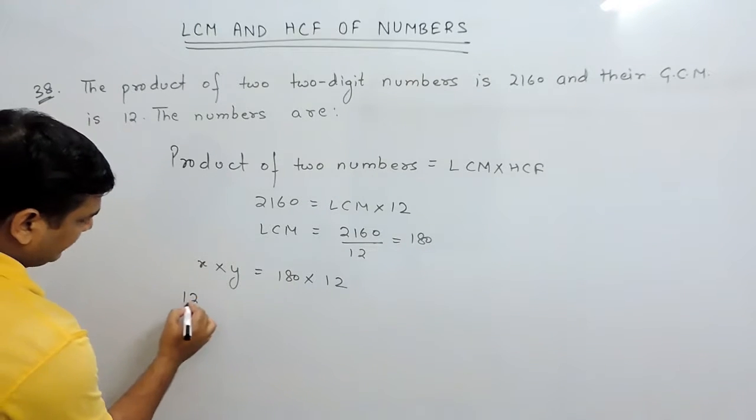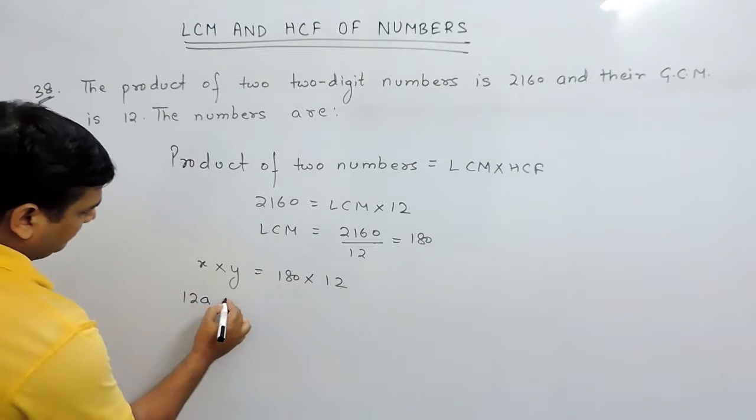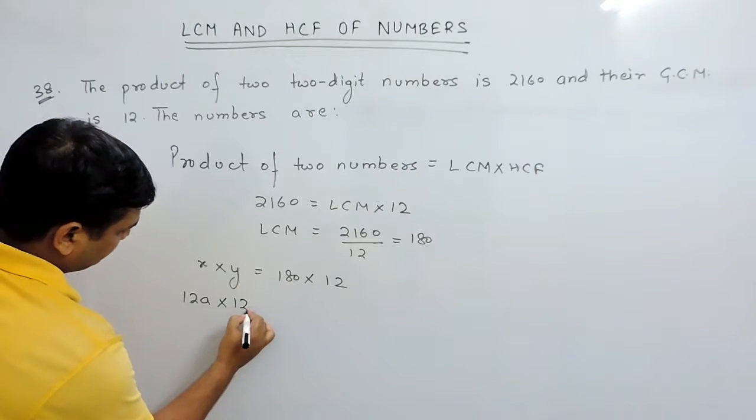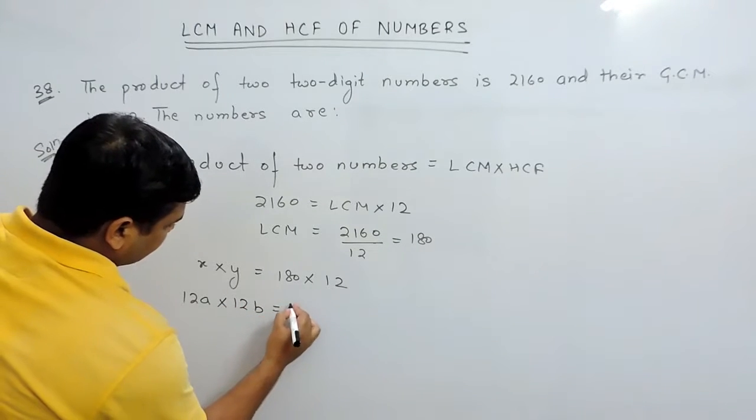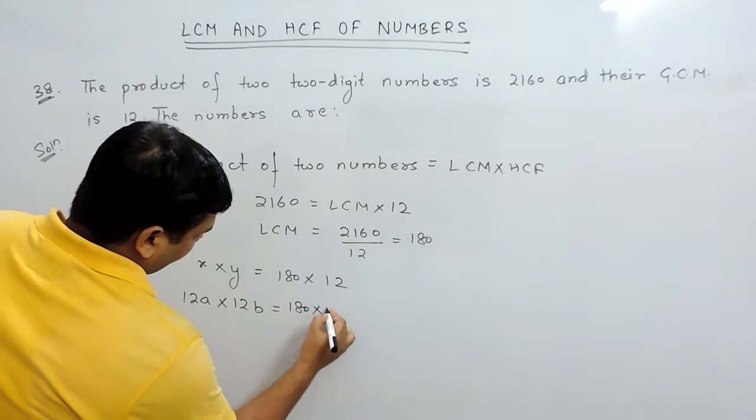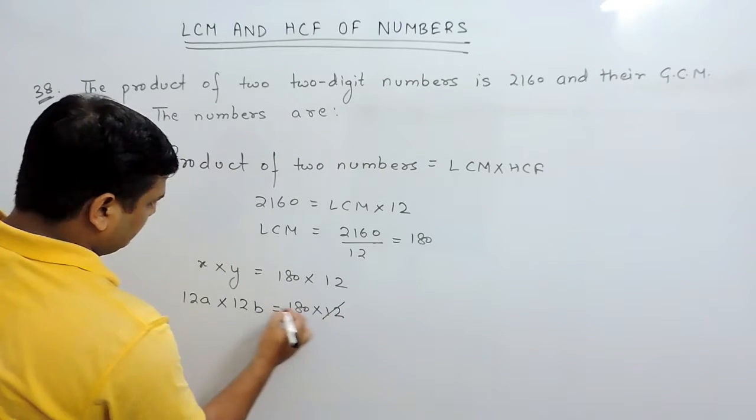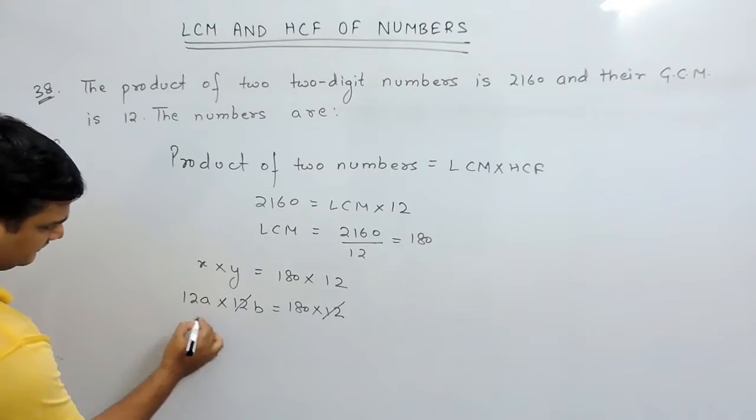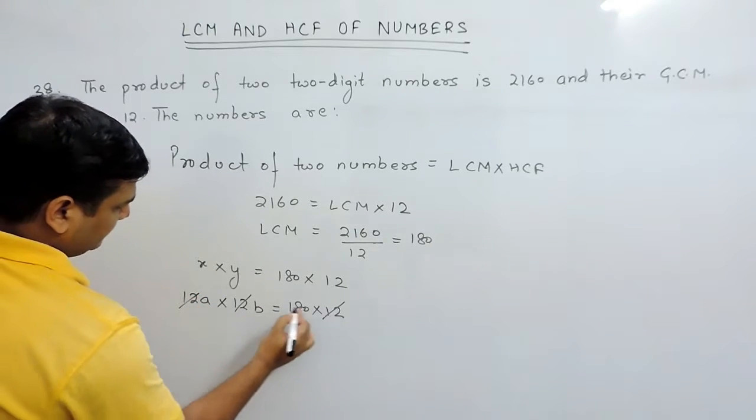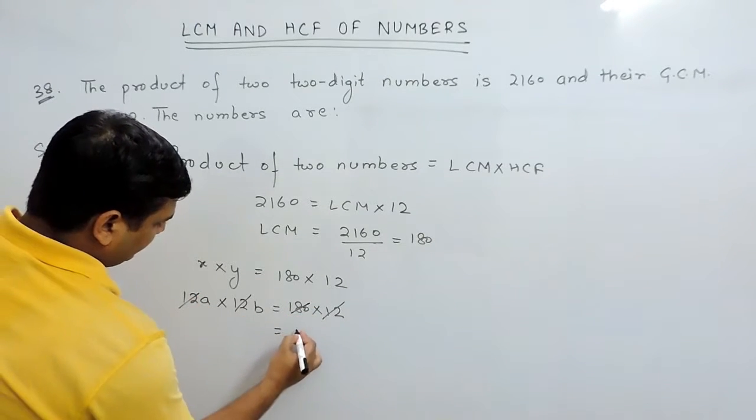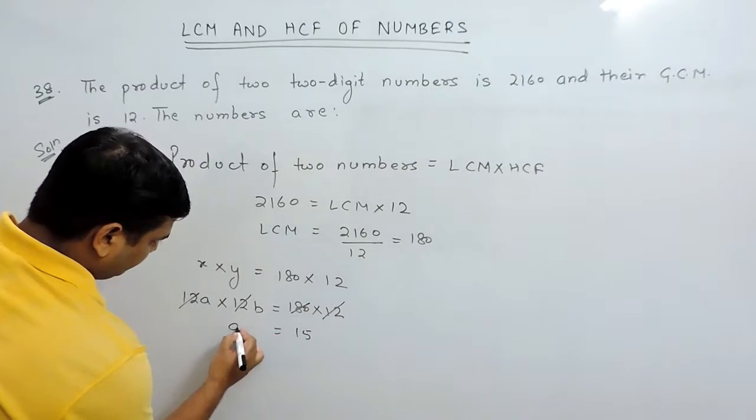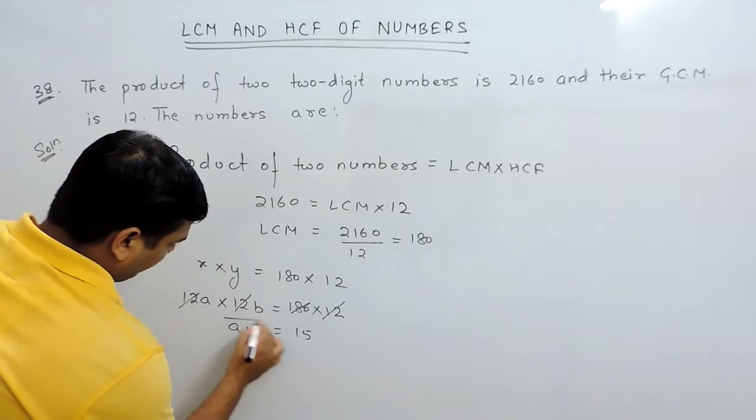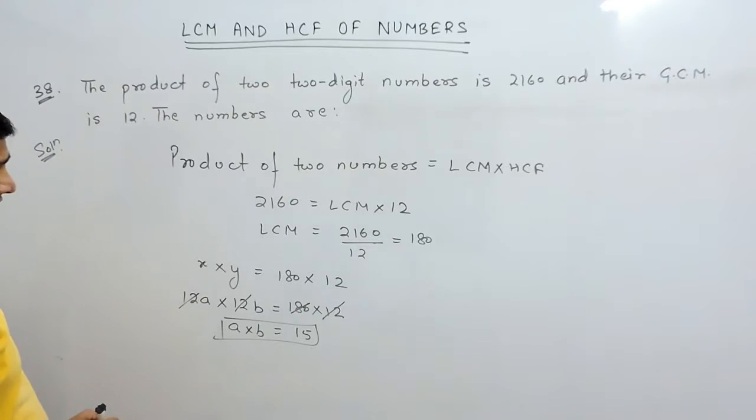So we can write X as 12A and we can write Y as 12B, and this must equal 180 into 12. So this 12 is cancelled out, and if we divide 180 by 12, then it is 15. Therefore, the product of A and B is 15.